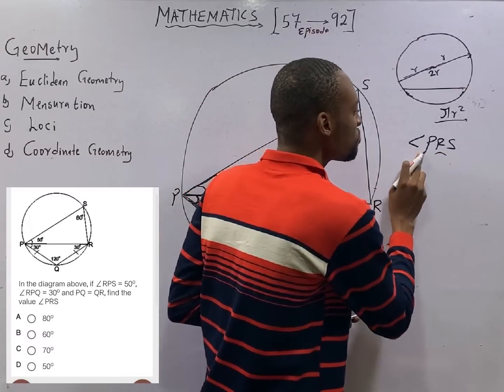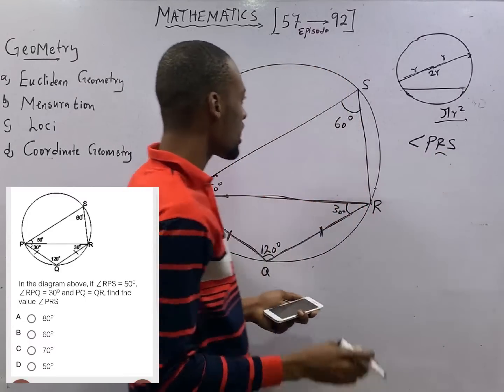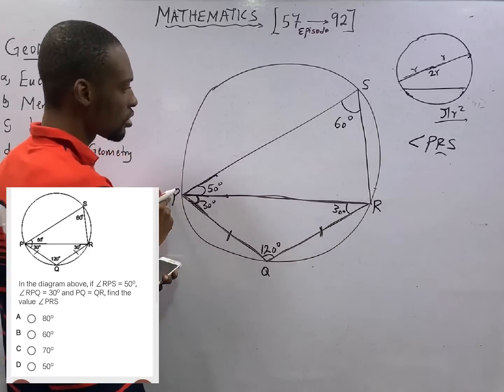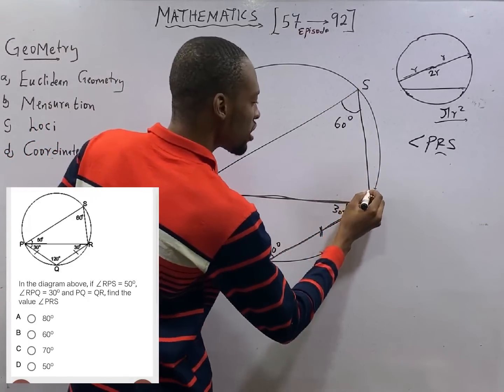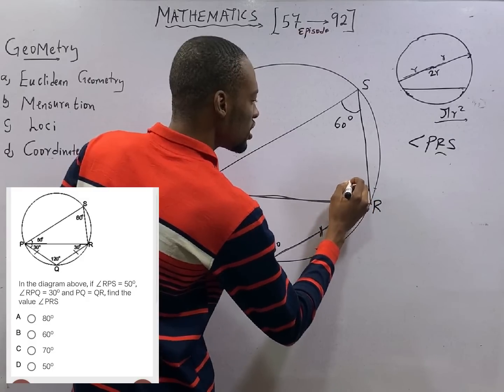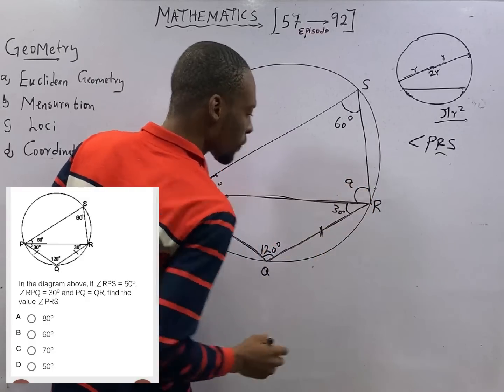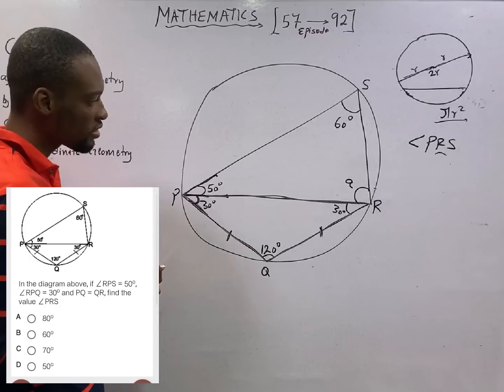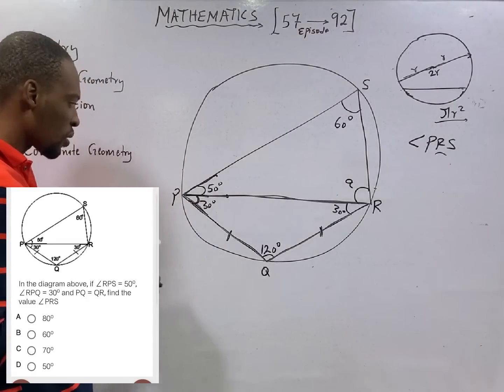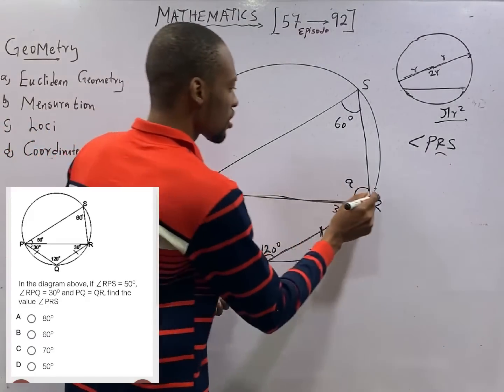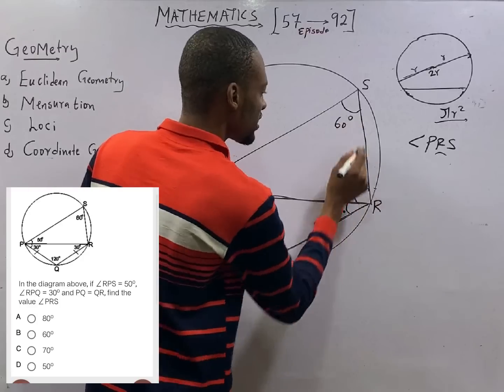Look at the angle between P and S. Where is P? PRS. So, this angle between P and S is PRS. This is what we are looking for. Let's call this A. PRS A. Looking PRS. PRS A.